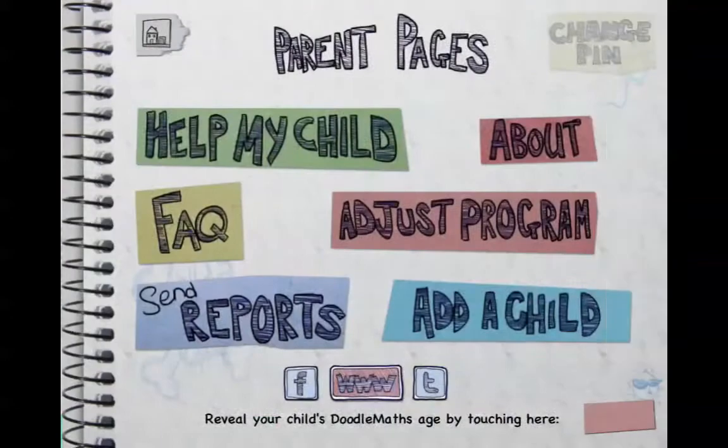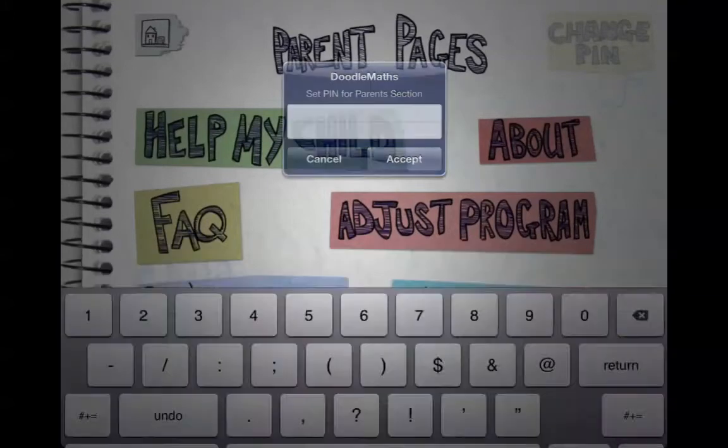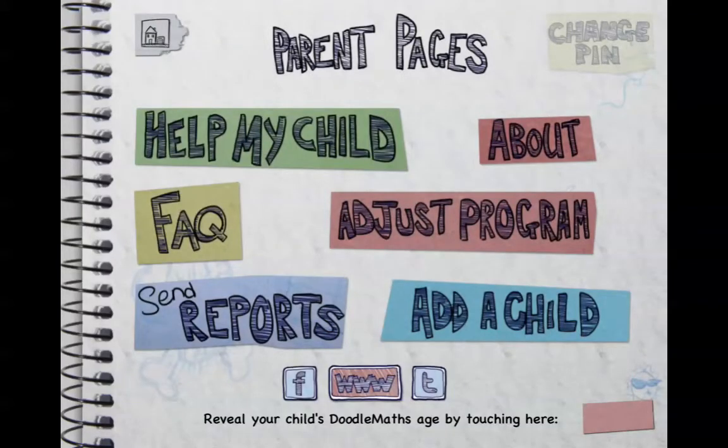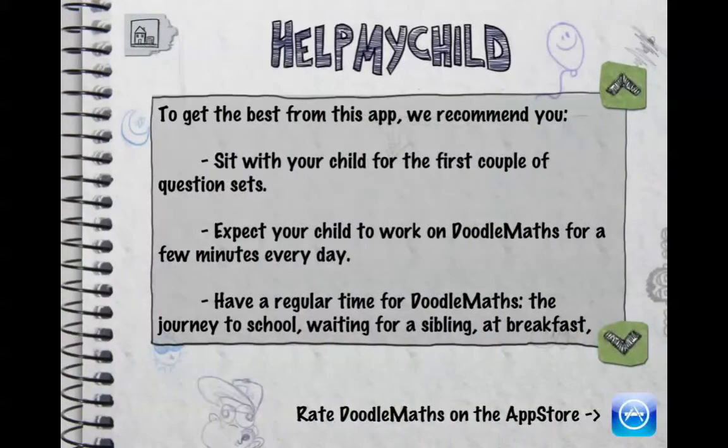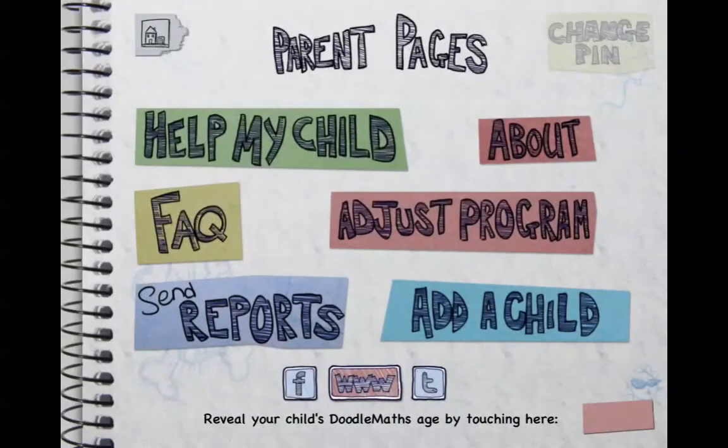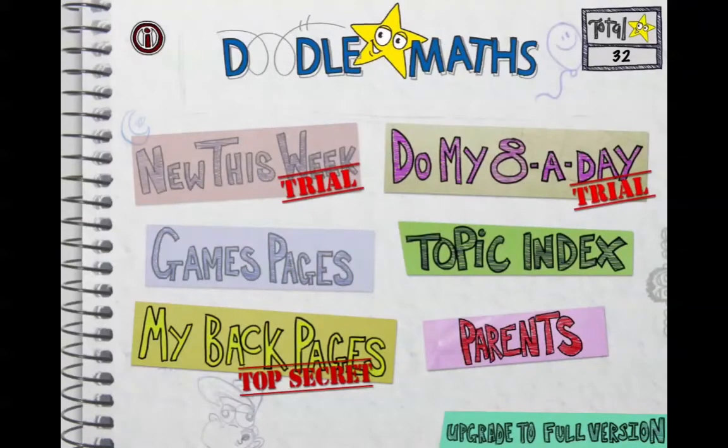Once you've done that a bunch of times, you can go into the games pages. There's also a parents page. You do need to upgrade to the full version to get the full use of all of these. You can go in and adjust the program, go in to help my child, and it gives you some tips.